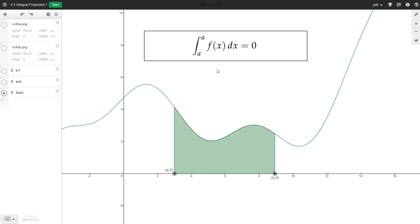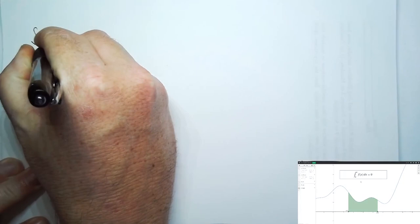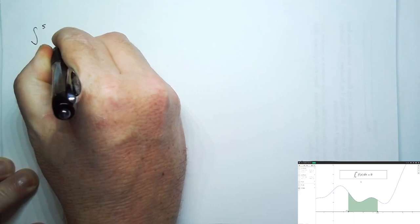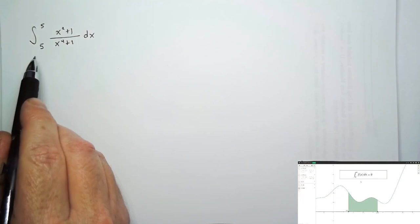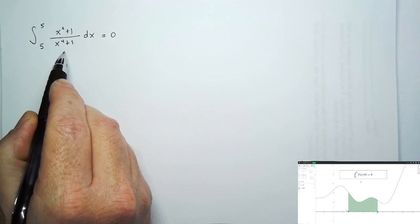For example, if someone asks you to find the value of this definite integral, because we're integrating from five to five, the answer must be zero, regardless of what function we have as the integrand.